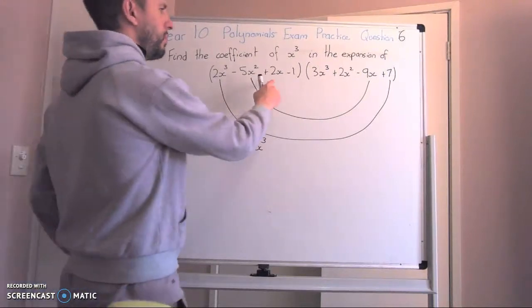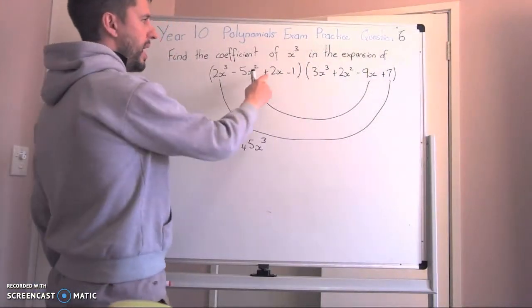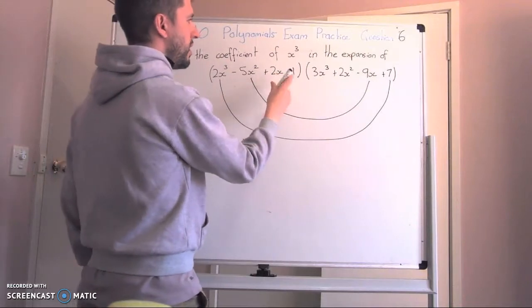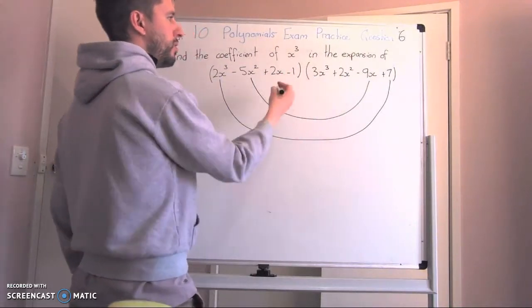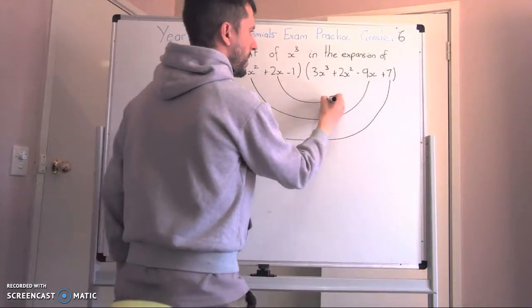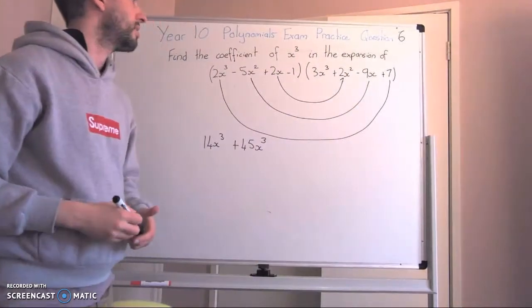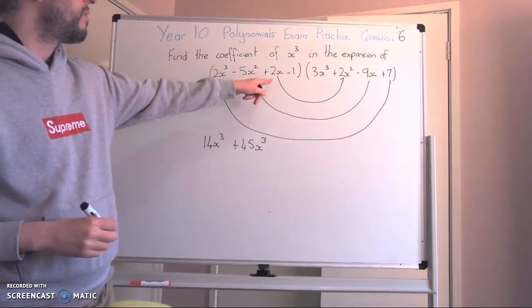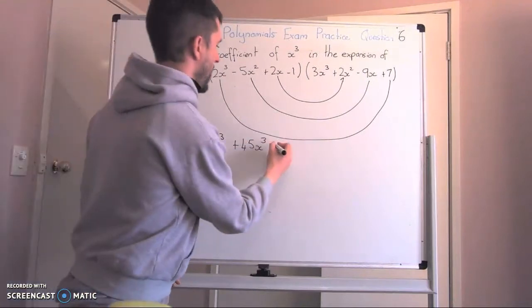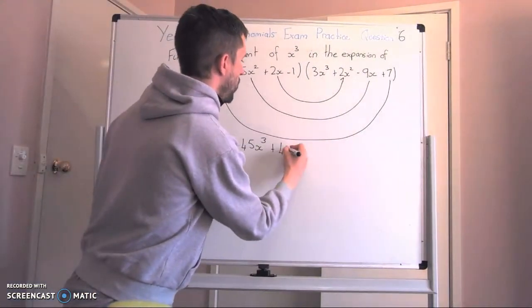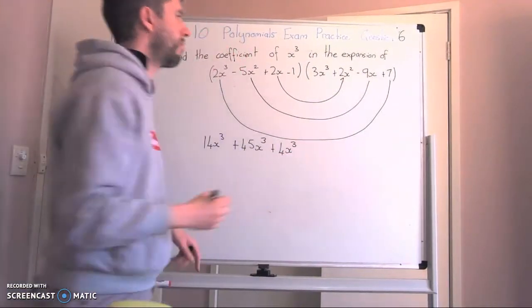Again here, I can see that we have 2x, and if this times with x², it will become x³. Which means I've got 2x times 2x², and that is equaling 4x³.